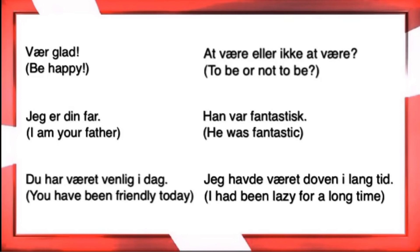'Han var fantastisk.' This is the past tense. 'Han var fantastisk' — he was fantastic or amazing. This is of course the most basic verb of all: 'at være,' to be. You've got to know all of these. They are actually irregular, and it's annoying, but you still gotta learn it. 'Han var fantastisk' — he was fantastic in the past.